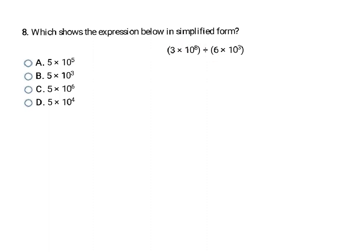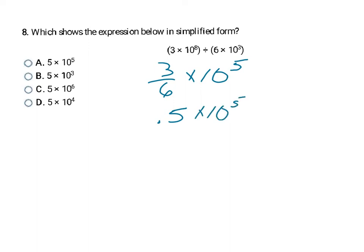In this question, I'm again dividing two numbers in scientific notation. I divide the coefficients: 3 divided by 6 is 0.5. Then I subtract the exponents: 8 minus 3 is 5, giving 0.5 times 10 to the 5th. Since 0.5 is not between 1 and 10, I move the decimal one place to the right to get 5. Because I made the number bigger, the exponent gets smaller by 1, giving 5 times 10 to the 4th — final answer D.